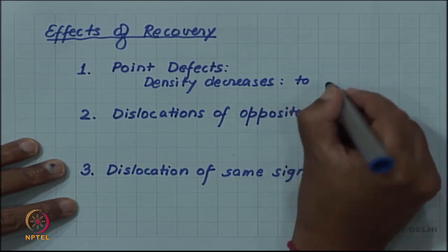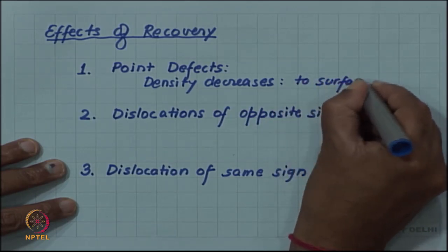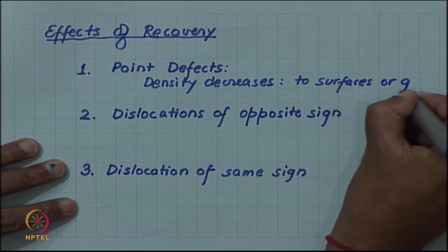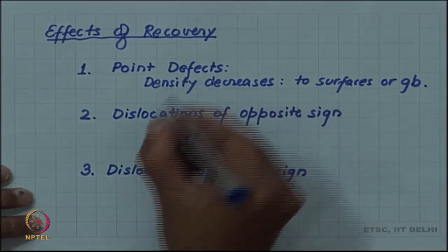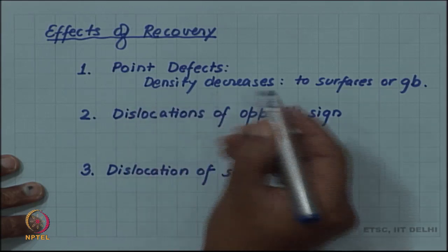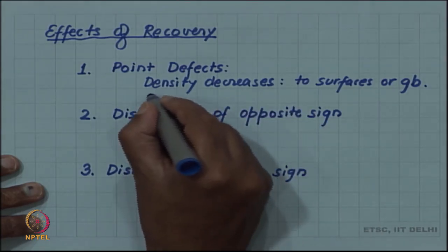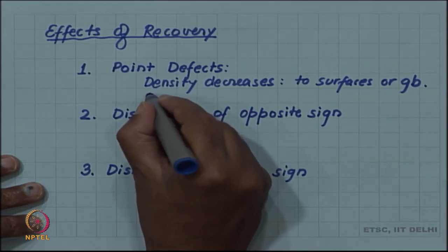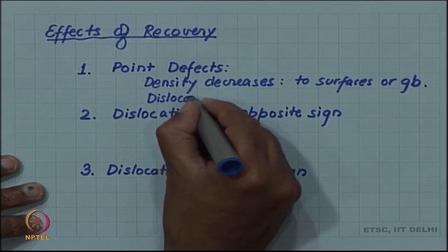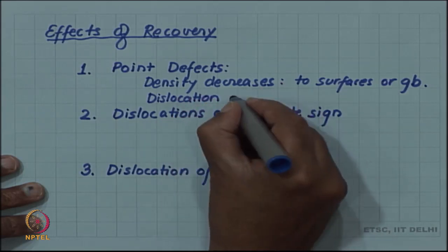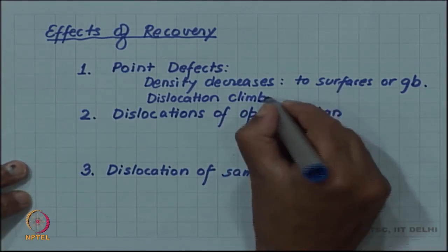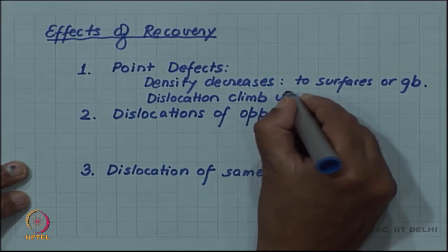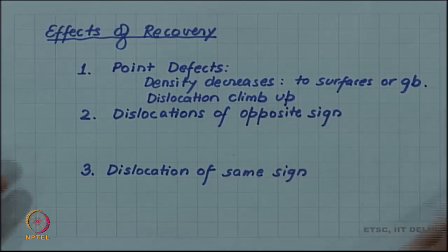Annihilated to surfaces or grain boundary and there is also point defects can annihilate by a mechanism of dislocation climb. If dislocation climbs up, the point defect density, the vacancy will come down.